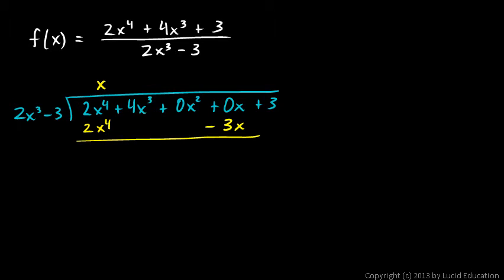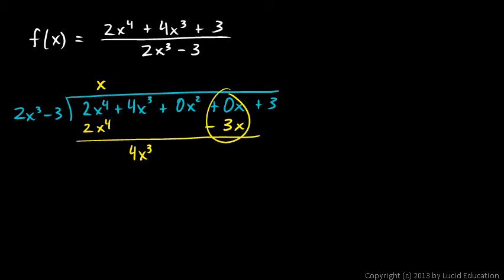I'll draw a line and subtract. 2x to the fourth minus 2x to the fourth is 0. Then 4x cubed minus nothing is 4x cubed. 0x squared minus nothing is 0, so I'll leave it blank. Be careful with the negative sign — we're doing this row minus that row. So 0x minus negative 3x is positive 3x. We have 4x cubed plus 3x, and then we bring down this plus 3.